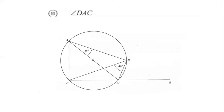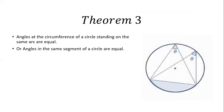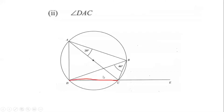Part two asks us to find angle DAC. We'll use another property from circle theorems. The theorem states that angles at the circumference of a circle standing on the same arc are equal, or angles in the same segment of a circle are equal. This is the arc on which they're standing.